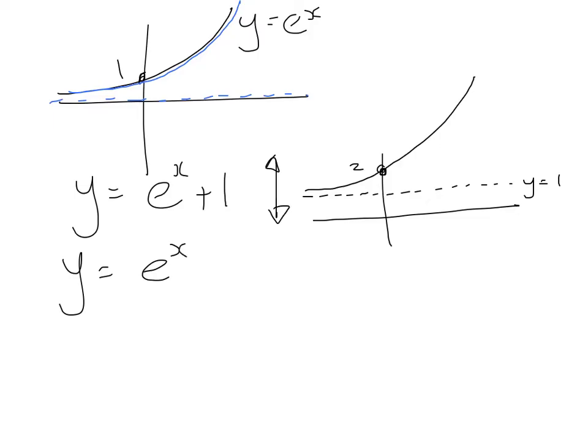y equals e to the x times it by 2. Okay, so there's a stretch that way, scale factor 2. So, the asymptote's still sitting there on the y-axis, and everything's going to get twice as steep. So, this will now be 2, and everything, you can't really tell in terms of the shape, but everything's stretched upwards twice as far.